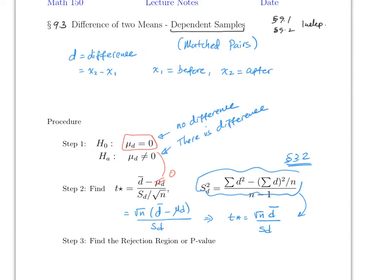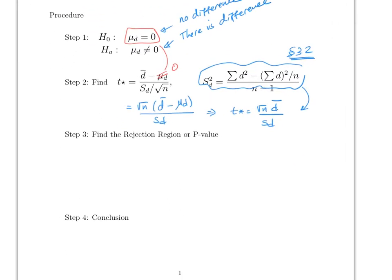The p-value and rejection region are identical to what you did in Section 8.2. The rejection region is plus or minus t of alpha over 2 with degrees of freedom equal to n minus 1. You have two samples but they are the same subjects, so n1 equals n2, and you just call that n, giving degrees of freedom of n minus 1. The p-value is twice the probability that t is greater than the absolute value of t-star.